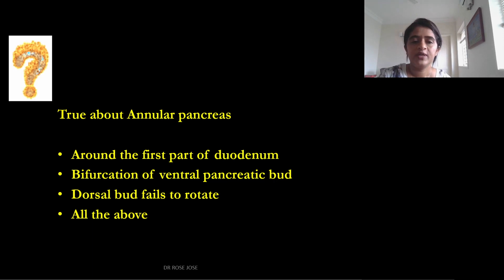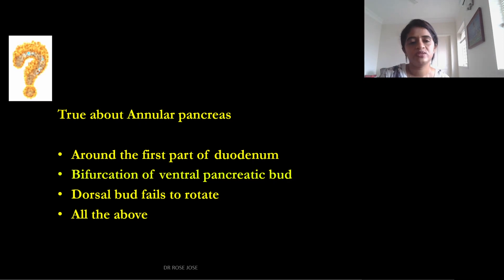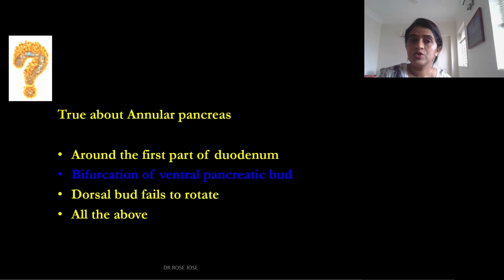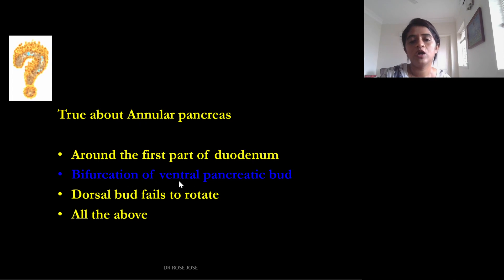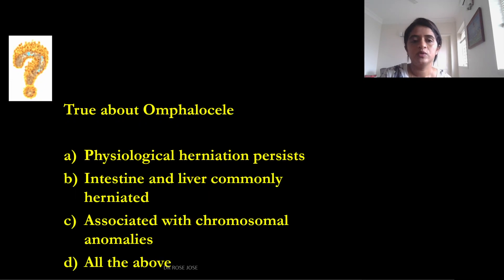Regarding MCQs on annular pancreas: it surrounds the second part (not the first part) of the duodenum, and it is caused by bifurcation of the ventral pancreatic bud — not failure of the dorsal bud to rotate. The two lobes of the ventral pancreatic bud encircle the second part of the duodenum.